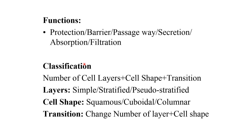Epithelial tissue is classified in two ways: by the number of cell layers and by cell shape. Classification by layers includes simple (single layer), stratified (multiple layers), and pseudo-stratified — a single layer where cells vary in height and nuclei are positioned differently, making them appear stratified. They are therefore called pseudo-stratified, meaning falsely stratified.